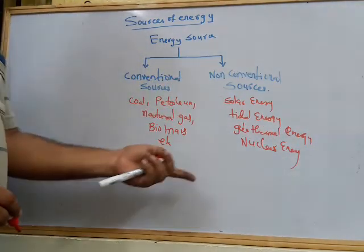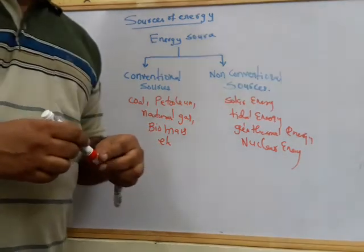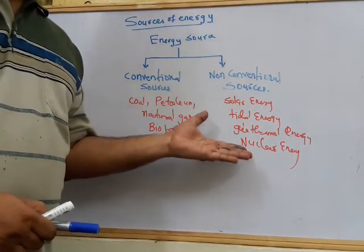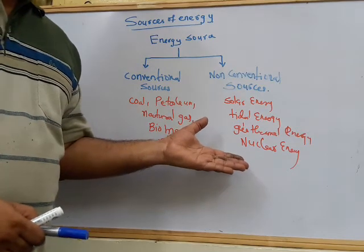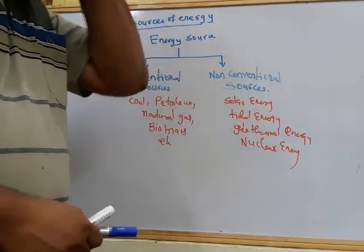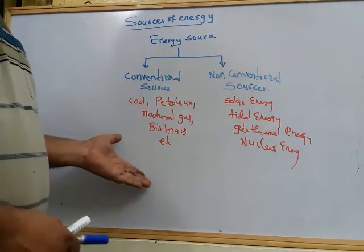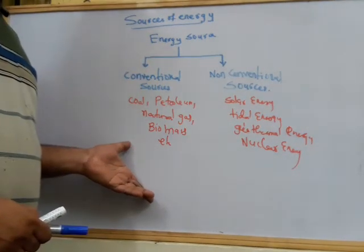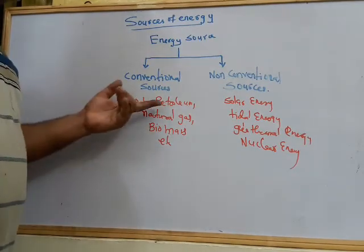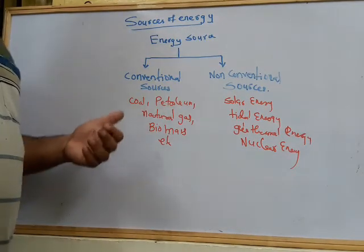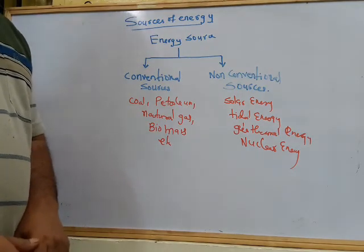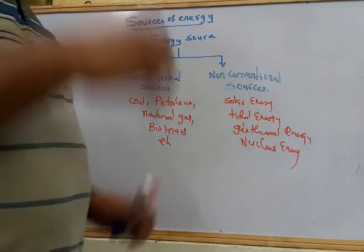Non-conventional sources of energy are not readily available to us because they require technology to harness. Without technology, we cannot derive this type of energy. But for conventional sources, we do not require special technology — we can simply purchase petrol, coal, natural gas, or biomass. In the next lecture, I will tell you more details about energy sources.